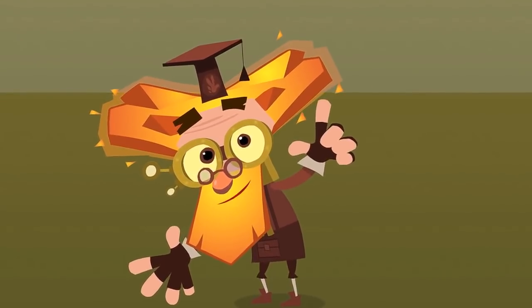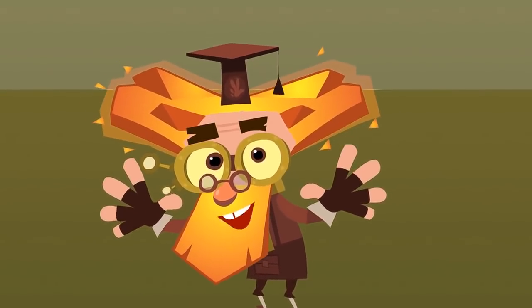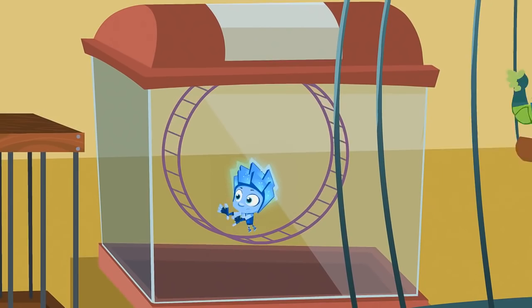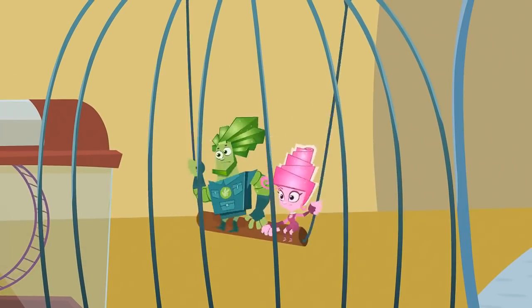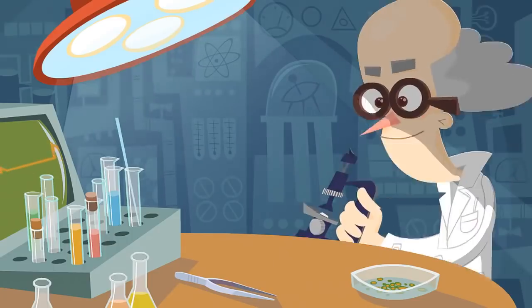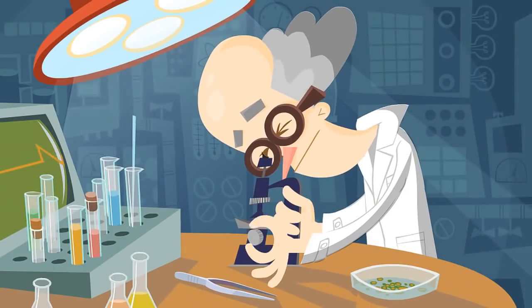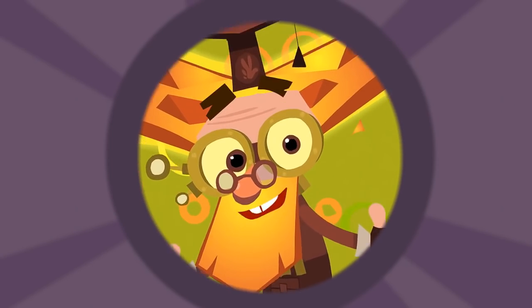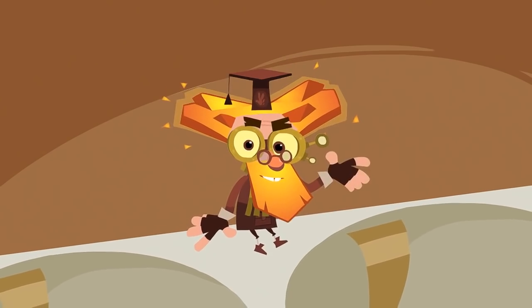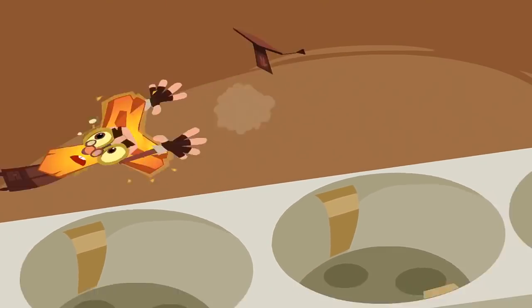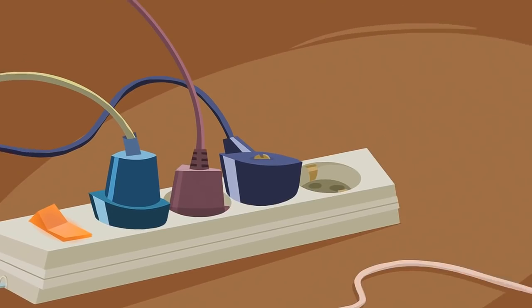The Fixies do everything they can to hide from humans. They are afraid that if humans discovered Fixies, they would hunt them down and capture them, and start keeping them in cages just like pets. And worse than that, they would take them into their laboratories and start examining them under microscopes, even conducting scientific experiments on them.